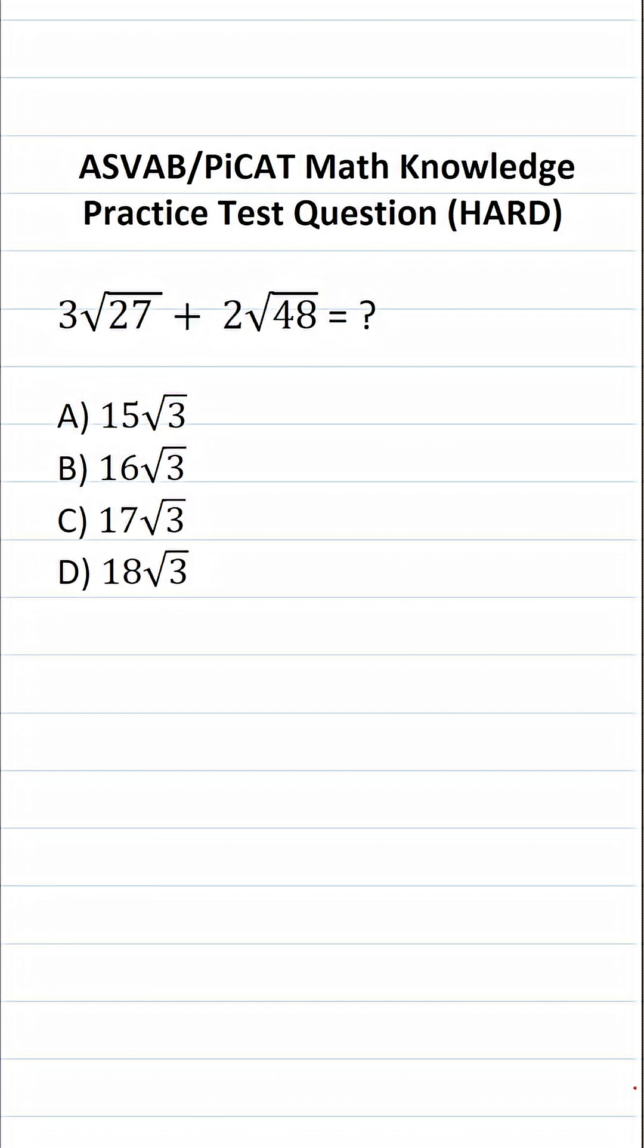This math knowledge practice test question for the ASVAB and PiCAT says 3 square root 27 plus 2 square root 48 equals. Again, on the actual ASVAB and PiCAT, you're not given a reference sheet or a calculator. For that reason, I recommend you get in the habit of copying things down and working them out on your own scratch paper.